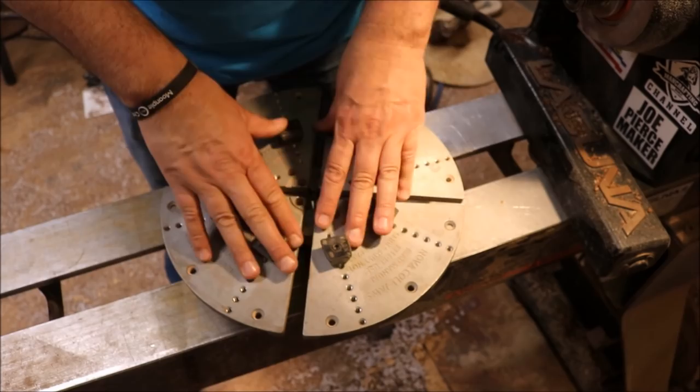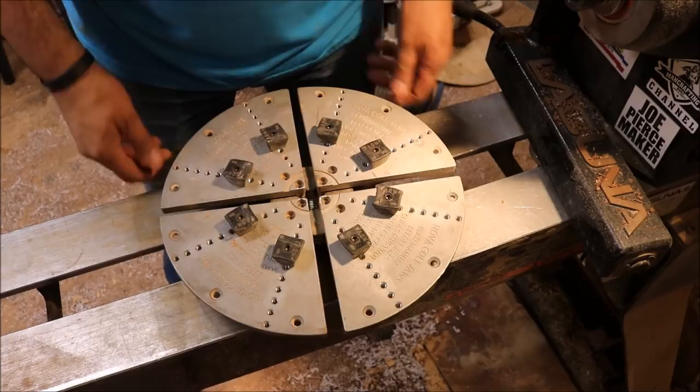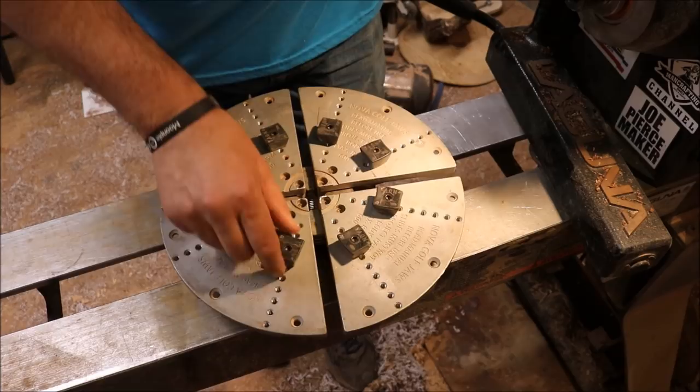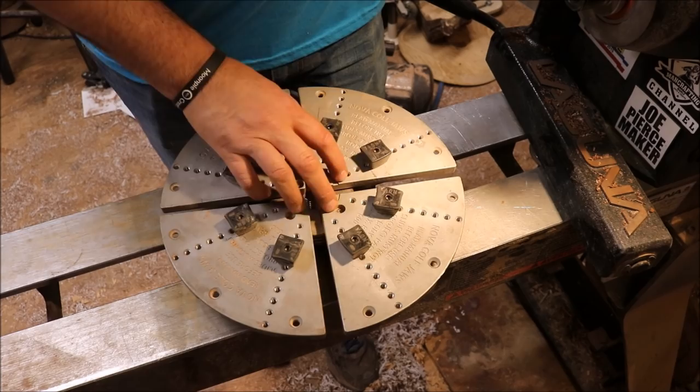These are ten-inch cole jaws. They're Nova and these are not the original bumpers. The original bumpers are round and they don't hold as well. I bought these aftermarket Nova ones. They're square and they're kind of wedged. And I've never had a bowl fly off yet.